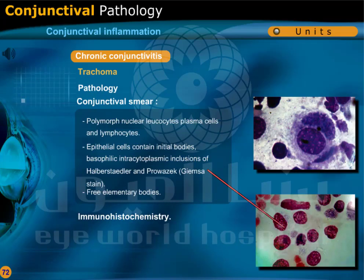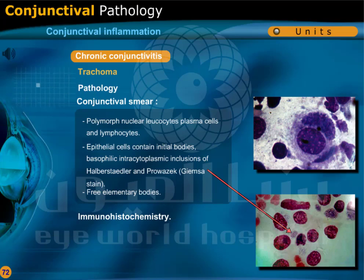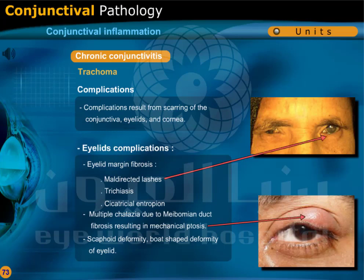In trachoma, immunohistochemistry is beneficial. The conjunctival smear shows polymorphonuclear leukocytes, plasma cells, and lymphocytes. Epithelial cells are present containing initial bodies — basophilic intracytoplasmic inclusions of Halberstaedter-Prowazek — by Giemsa stain. There are also free elementary bodies.